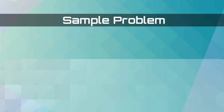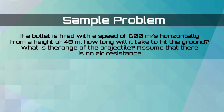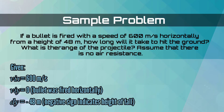Let us try to answer a sample problem. If a bullet is fired with a speed of 600 meters per second horizontally from a height of 48 meters, how long will it take to hit the ground? What is the range of the projectile? Assume that there is no air resistance. So we have our given: the vix or initial horizontal velocity is equal to 600 meters per second. The initial vertical velocity is zero, because the bullet was fired horizontally. We also have dy, which is equal to negative 48 meters — the negative sign is indicated because of the height of the fall.